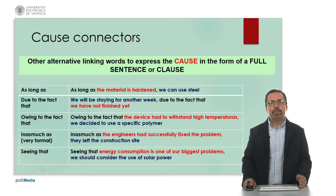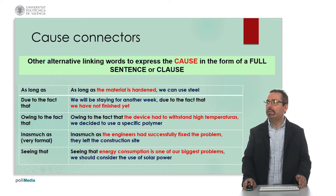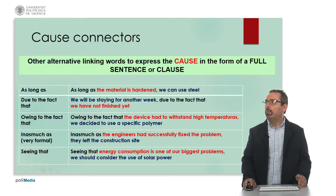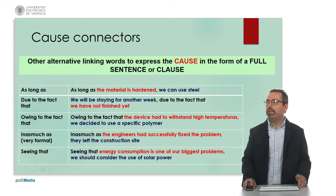Other alternative words to express the cause, but also in the form of a full sentence or clause, like in the case of because, since, or as, are listed here. The most difficult ones are: as long as — for example, as long as the material is hardened, we can use steel. Due to the fact that — for example, we will be staying for another week due to the fact that we have not finished yet. Owing to the fact that — for example, owing to the fact that the device had to withstand high temperatures, we decided to use a specific polymer.